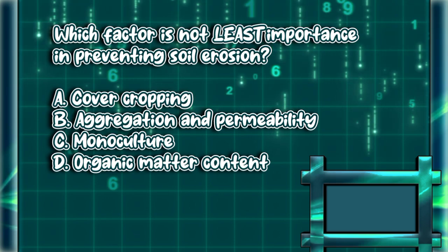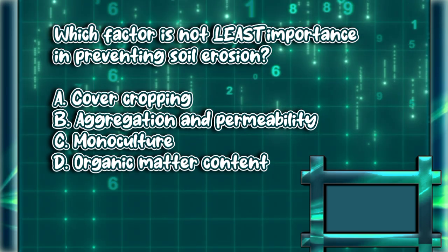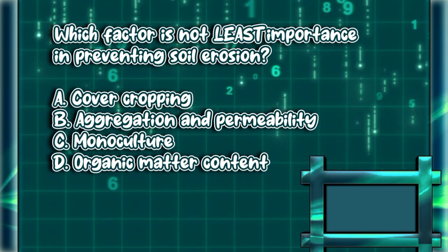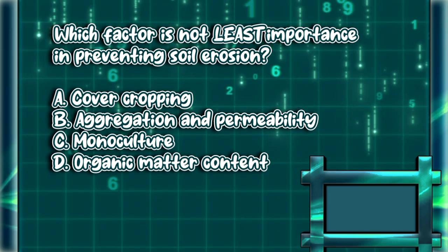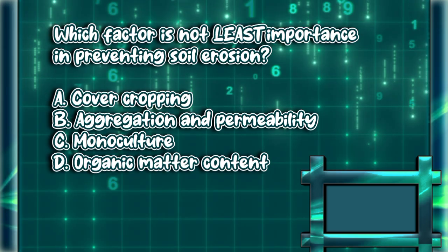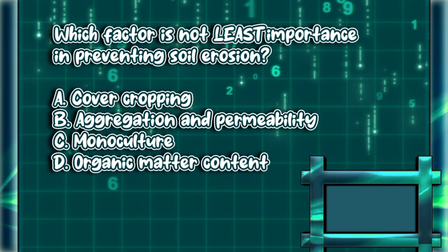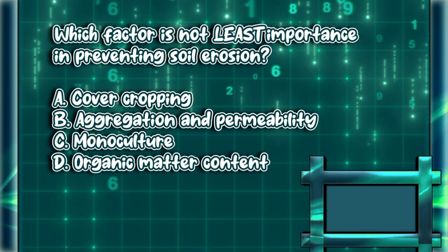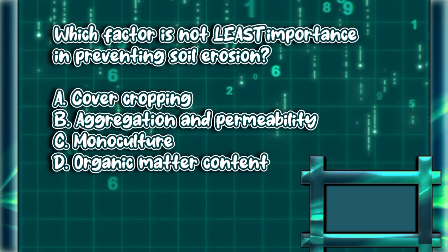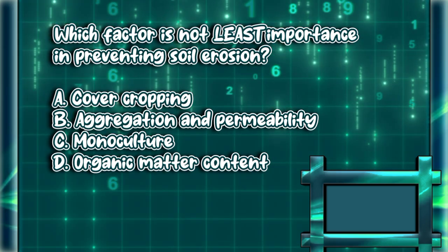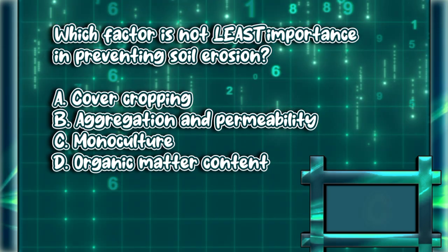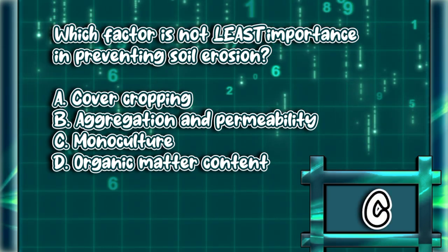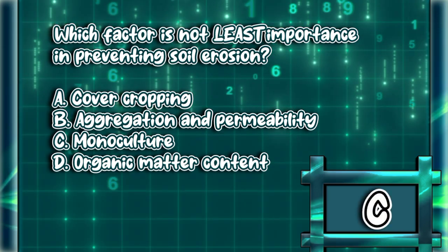Which factor is of least importance in preventing soil erosion? A. Cover cropping. B. Aggregation and permeability. C. Monoculture. D. Organic matter content. The answer is letter C.